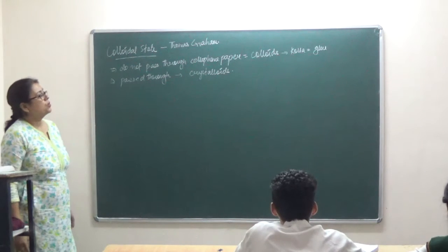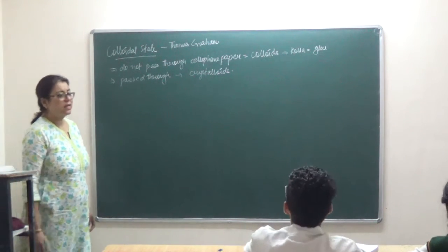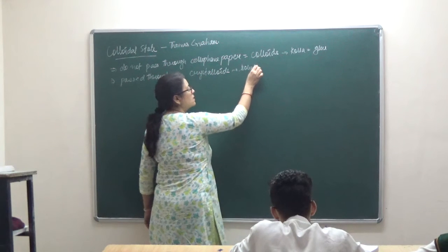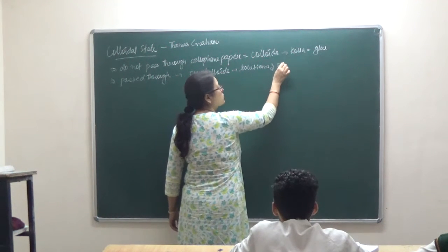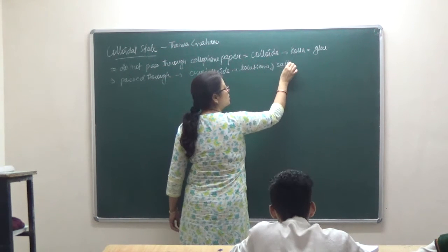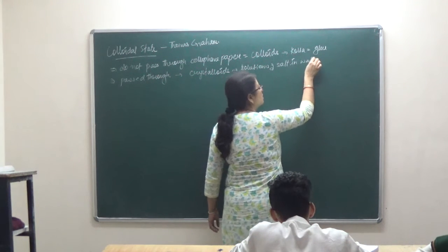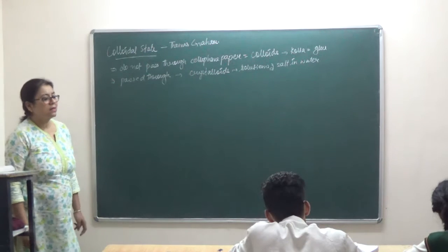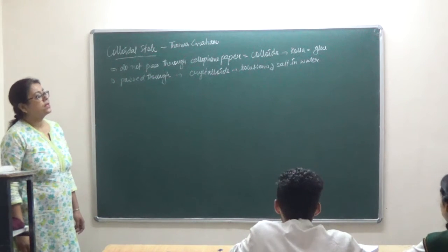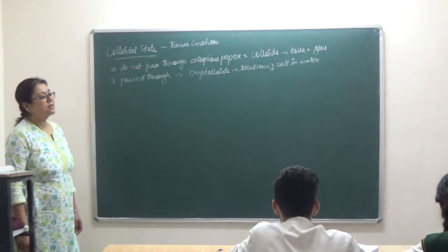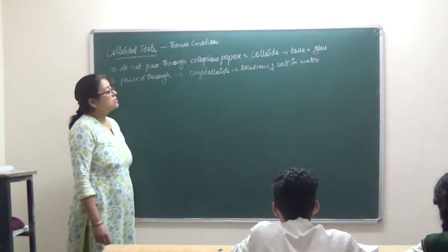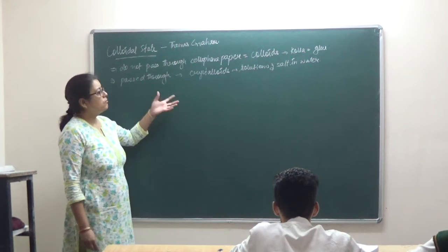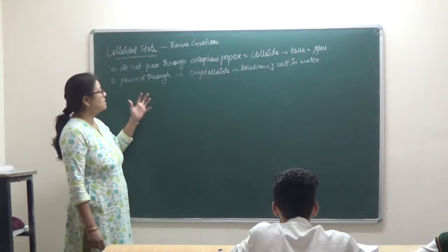The word 'colloids' comes from the Greek word 'kola', which means glue. He said that colloids have a larger particle size than crystalloids. Crystalloids were basically solutions of salt in water.